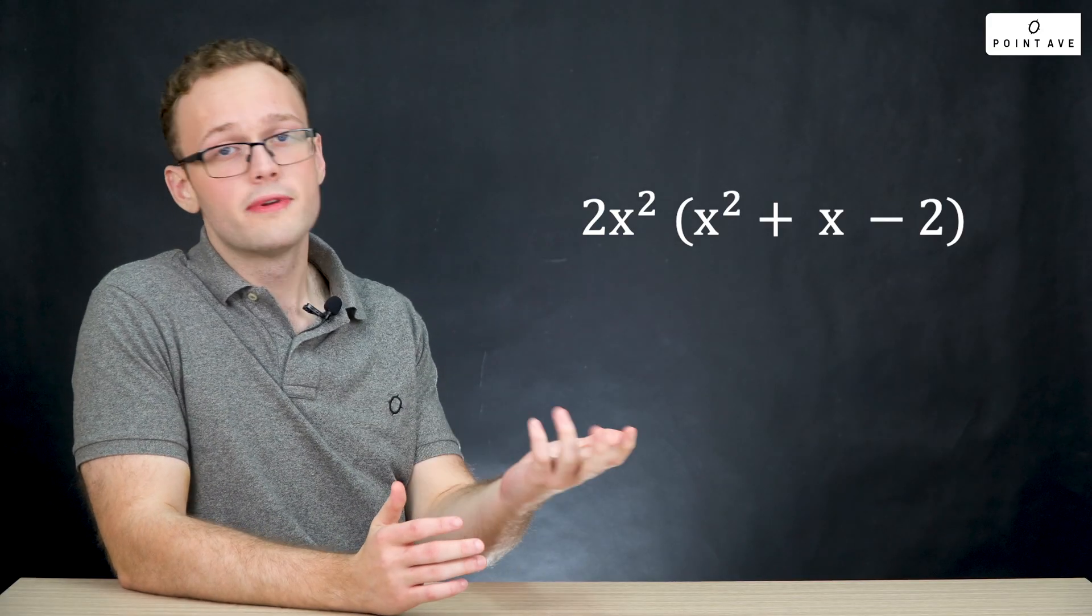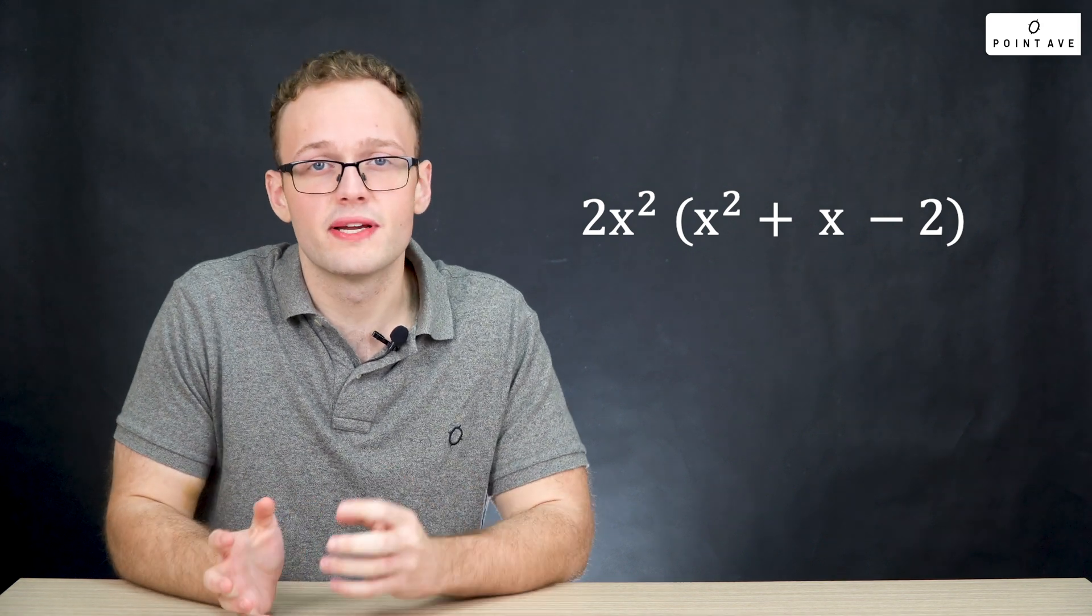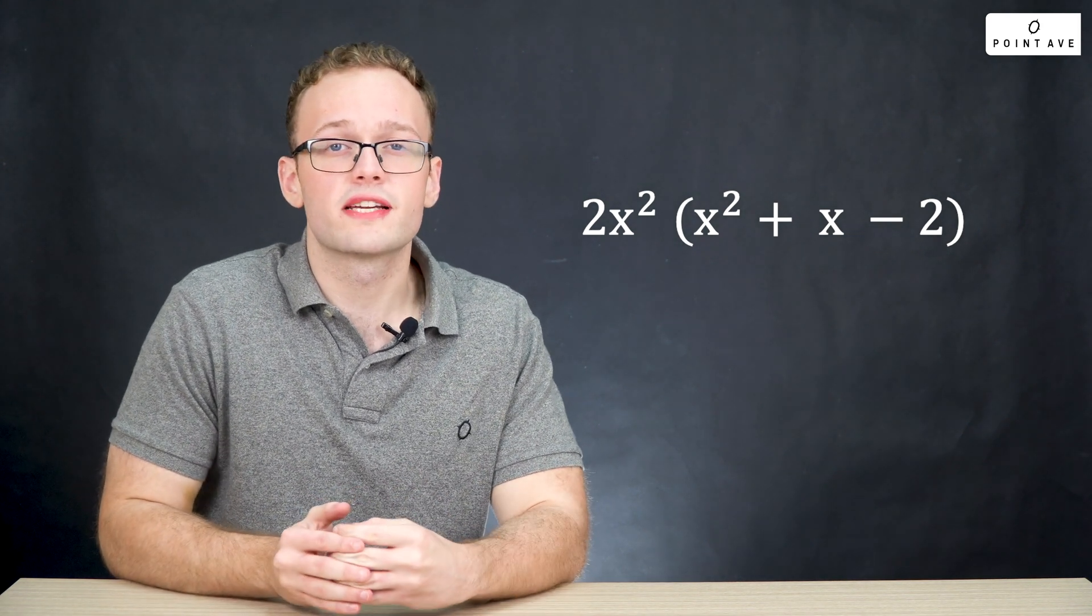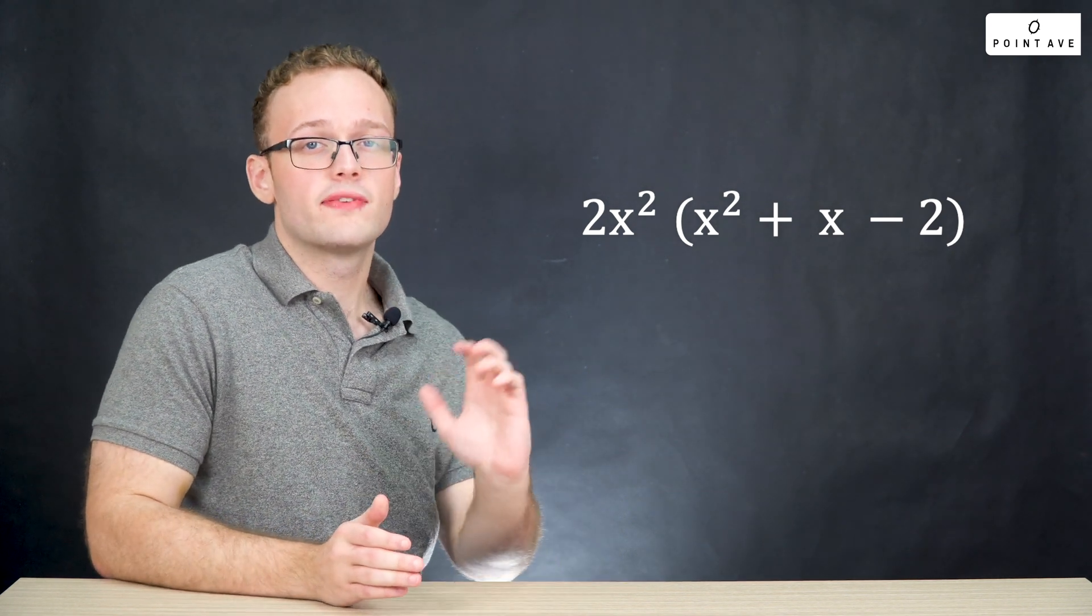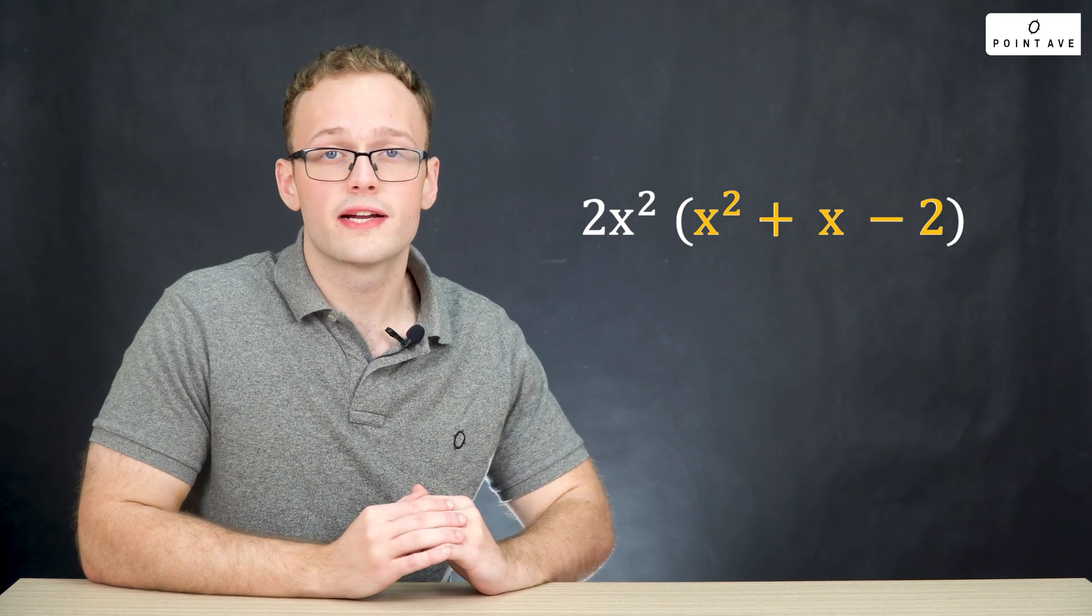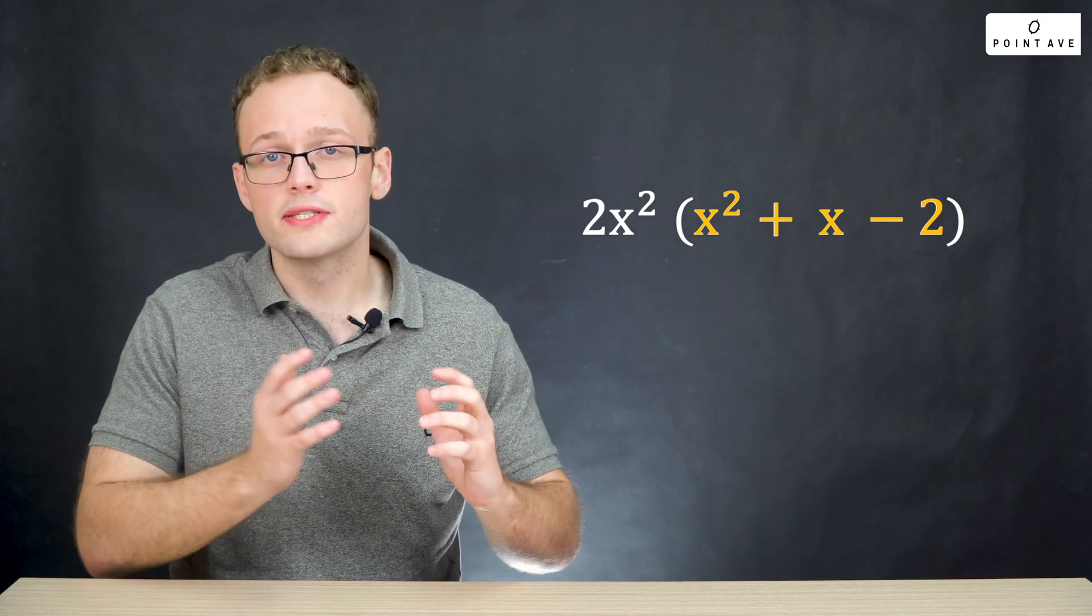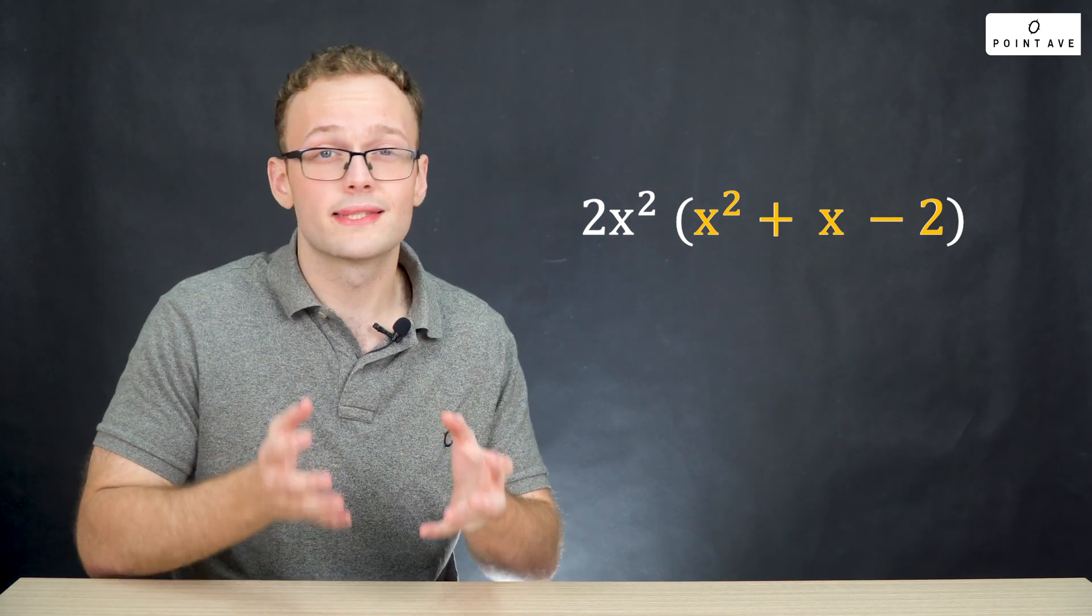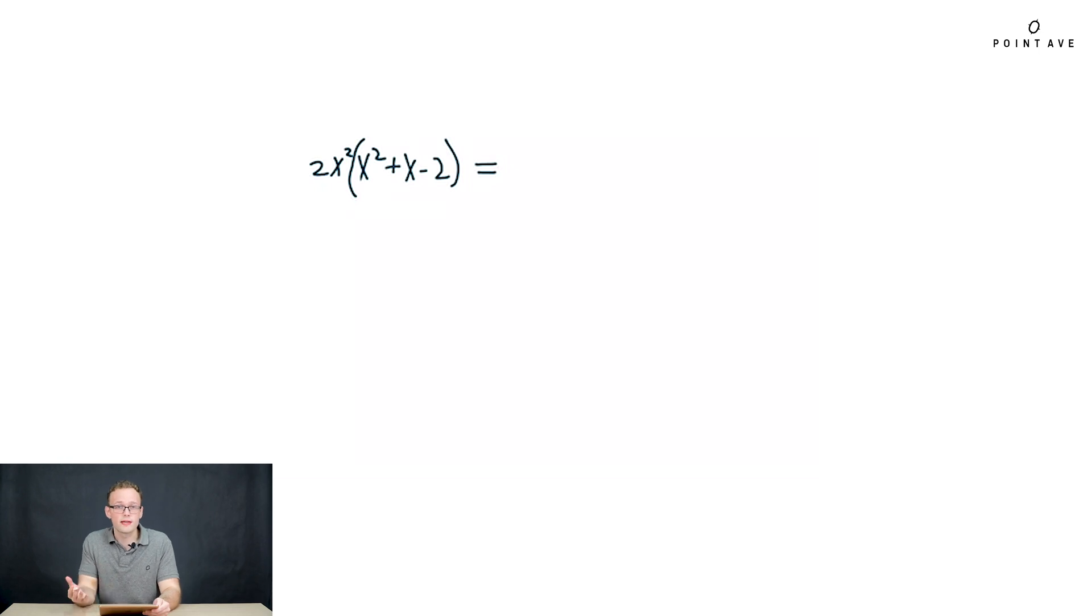We factored out all common factors, the 2x squared, but are we done factoring? No. Whenever you factor one method, you always want to make sure that you check if there are any other ways that you can factor. In this case, we see what we have left is actually a quadratic expression. The number one way and what you should always start by trying is product sum. Let's drop the 2x squared for now, but we'll make sure we throw it back in later.